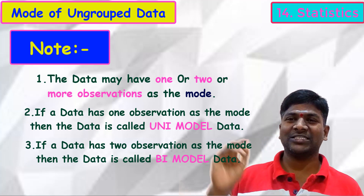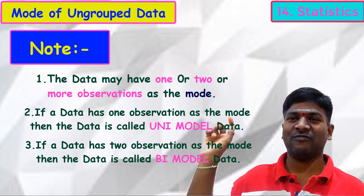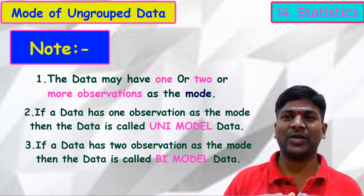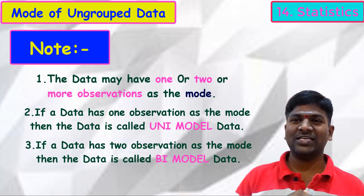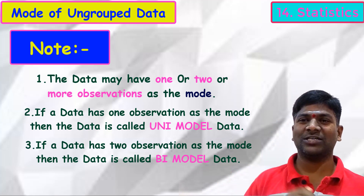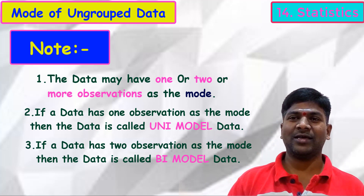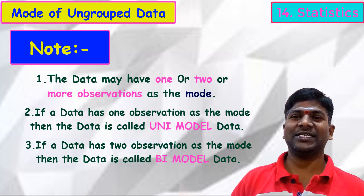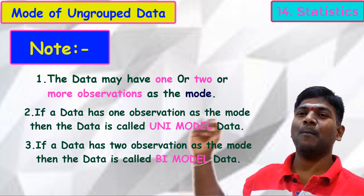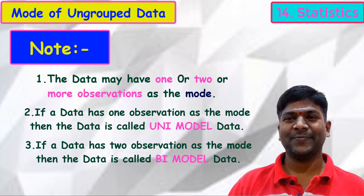To summarize: data with a single mode is called unimodal data, and data with two modes is called bimodal data.